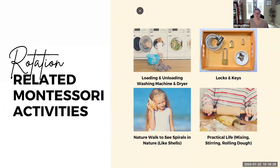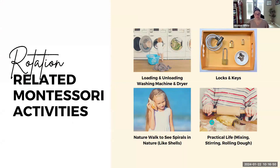For children in the rotation schema, they might be interested in loading and unloading the washing machine and dryer — especially a machine with a viewing window where they can watch the clothes spin. They might also enjoy locks and keys, screwdrivers and screws, nuts and bolts — because it involves turning. Practical life activities like mixing, stirring, and rolling dough are great, as is going on nature walks to observe spirals occurring naturally, like in shells or snails.